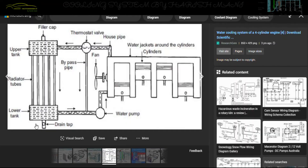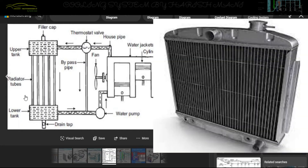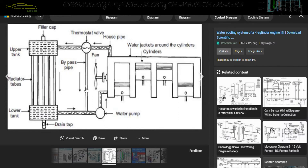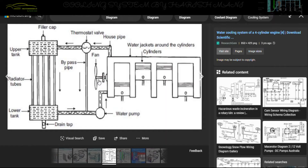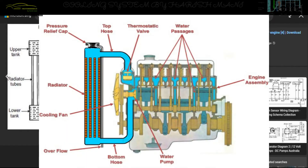This is a radiator. It has two main parts: radiator tubes and fins. It also has an upper tank, a lower tank, a filler cap, and a drain plug. Next components include: thermostat, water pump, fan, and bypass pipe. These are the main components. There is also the water jacket.